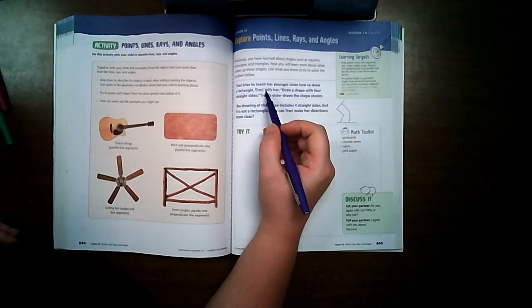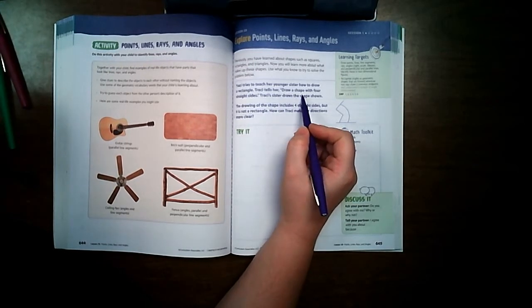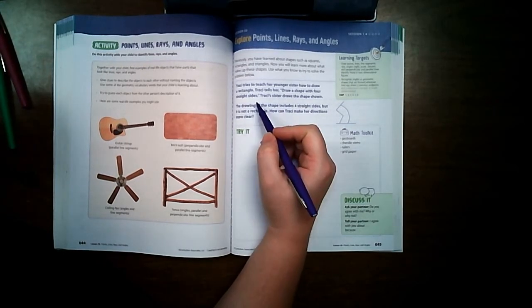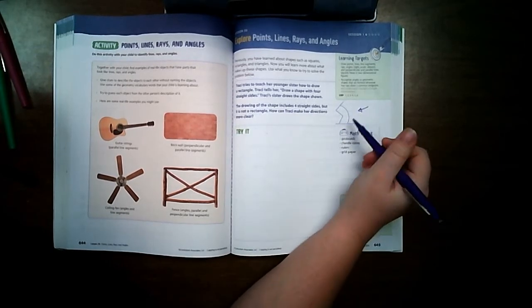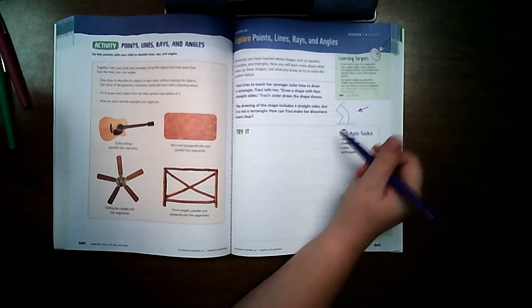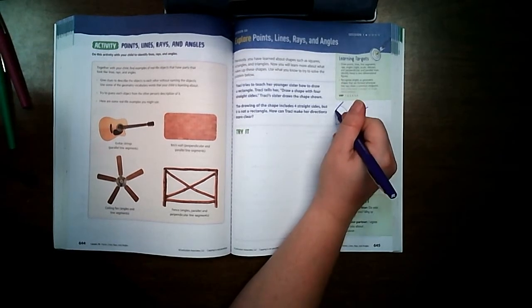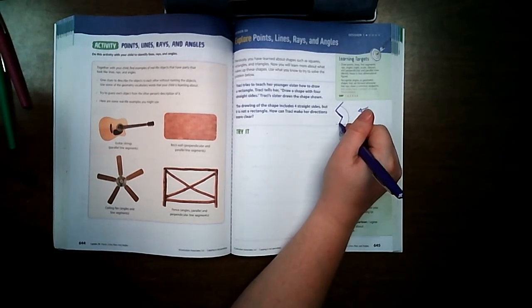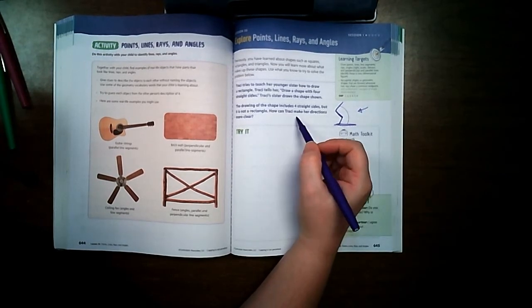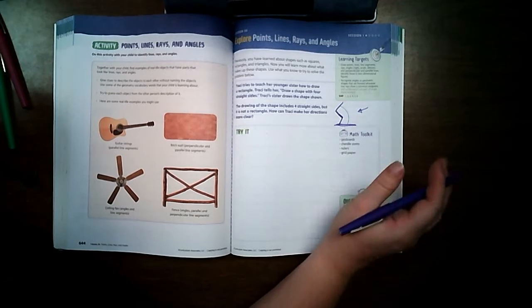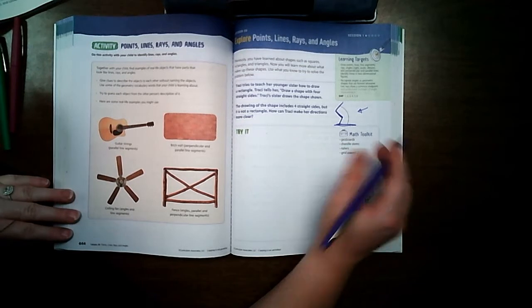Tracy tries to teach her younger sister how to draw a rectangle. Tracy tells her, draw a shape with four straight sides. Tracy's sister draws the shape shown. Does this look like a rectangle? Not really. The drawing includes four straight sides, but it is not a rectangle. How can Tracy make her directions more clear? It's very important when we're working with geometry to be clear whenever we're saying things.